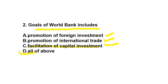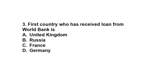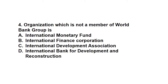Question three: which was the first country to receive a loan from the World Bank? This is a static question and sometimes asked in a twisted form. The correct answer is France — France was the first country to receive a loan from the World Bank.